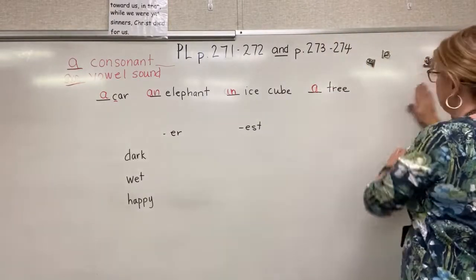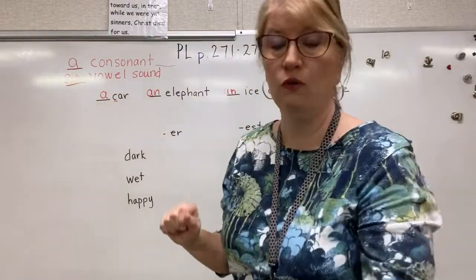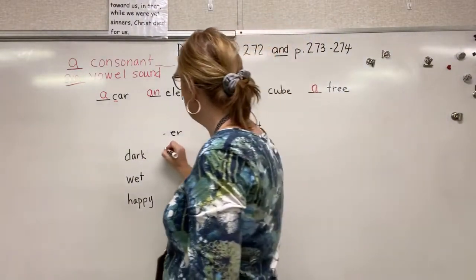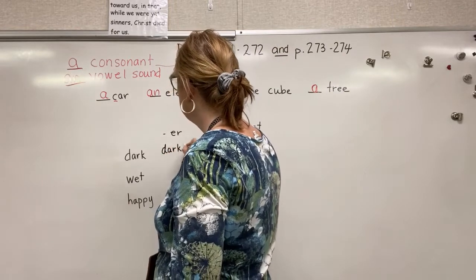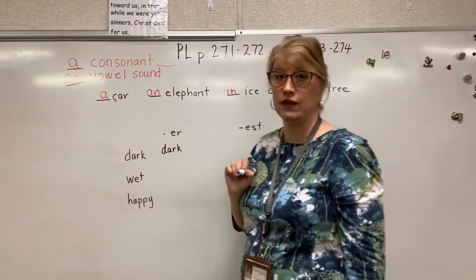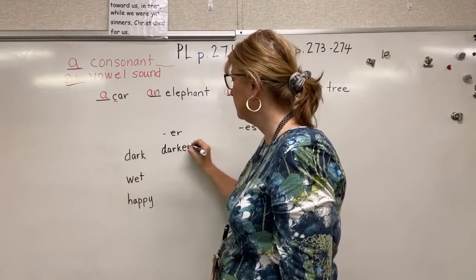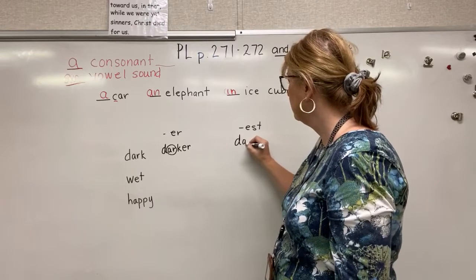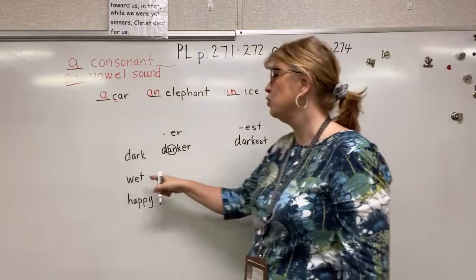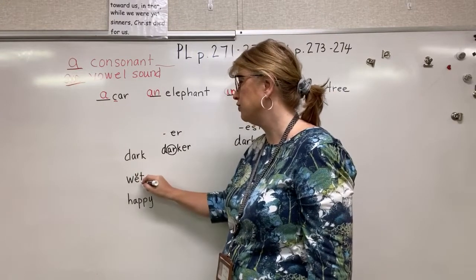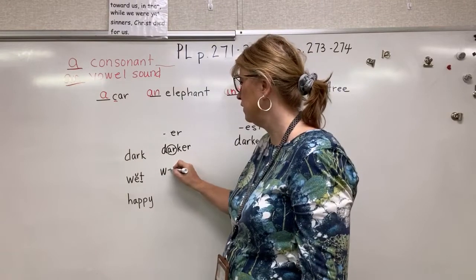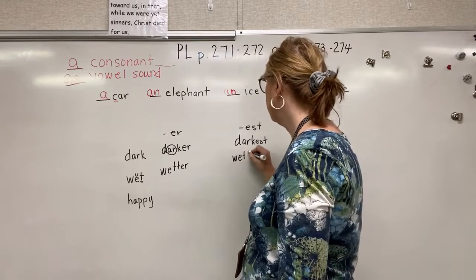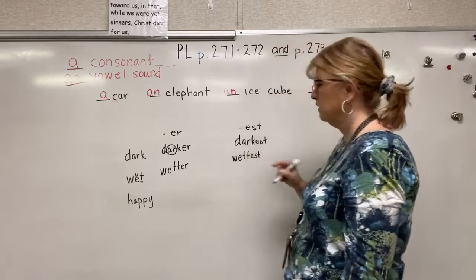We have to remember our spelling rules when spelling these words. Take 'dark' — we're going to make 'darker.' Would we double the K? No, we leave it because it is not a short vowel sound — it is a special sound. Same thing with 'darkest,' we just add -est. Now when we get to 'wet,' it is a short vowel so we have to double the T: W-E-T-T-E-R. Same thing for 'wettest' — it is a short vowel so we double it.